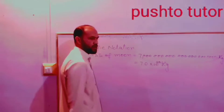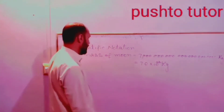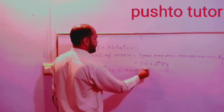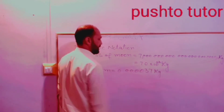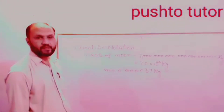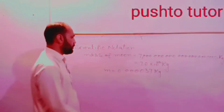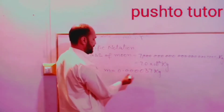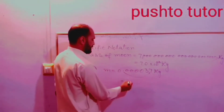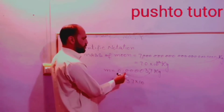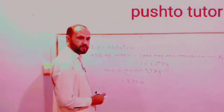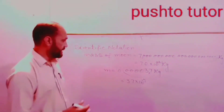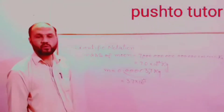So 7 × 10^22 kg is the scientific notation for the mass of the Moon. Now consider a small number: 0.000037 kg. That is expressed in scientific notation as 3.7 × 10^-5. When the decimal point moves to the right side, the power is negative.